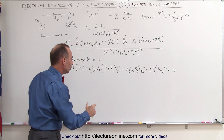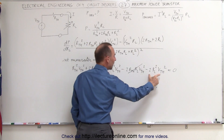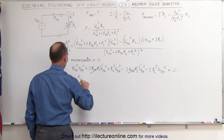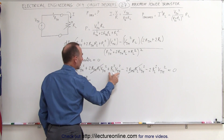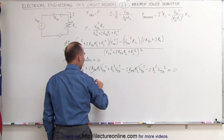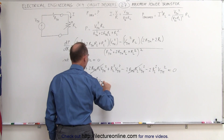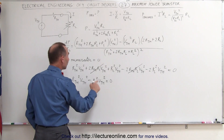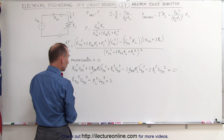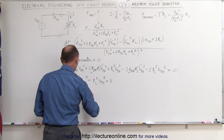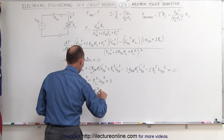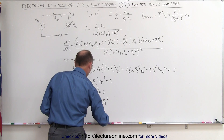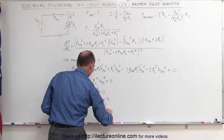The two times R-thevenin R-sub-L V-thevenin squared terms cancel each other out. The R-sub-L squared term minus twice that simplifies to minus one of those. So we get R-thevenin squared times V-thevenin squared minus R-sub-L squared times V-thevenin squared equals zero. Dividing both sides by V-thevenin squared leaves us with R-thevenin squared equals R-load squared, or simply R-thevenin equals R-load.